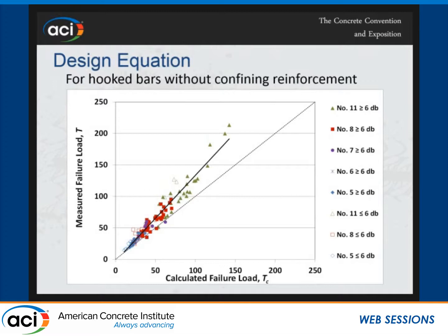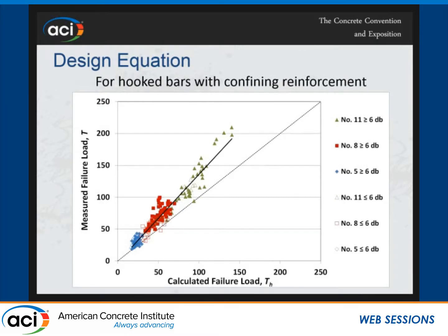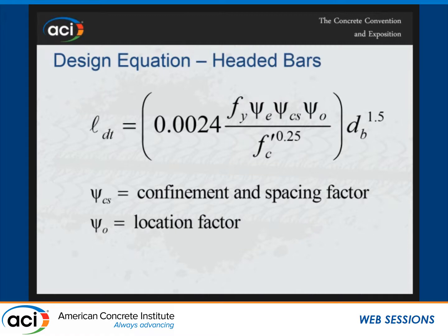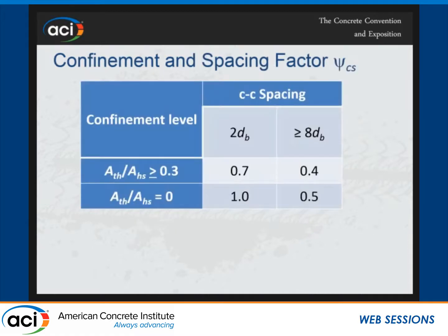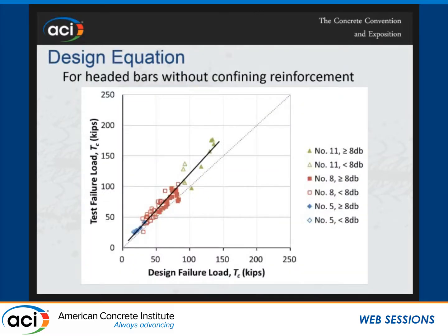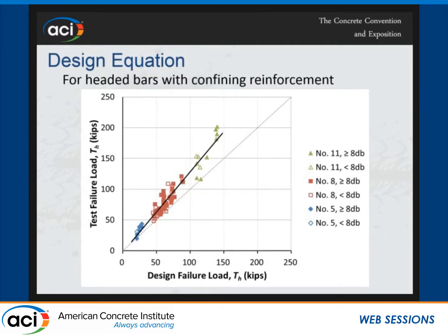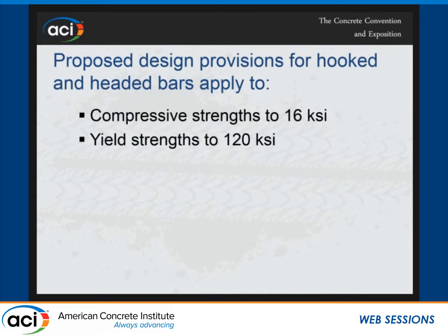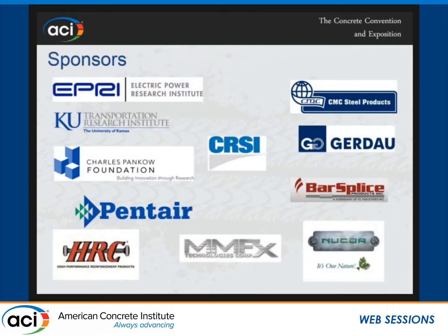So how do we do? This is measured force versus calculated load for hook bars without confining reinforcement — they did quite well, averaging about 1.25 above 1.0. Here are hook bars with confining reinforcement. This is our expression for headed bars — 0.24 power, otherwise similar terms. We have a similar confinement spacing factor, except here we let the spacing get out as far as eight bar diameters center to center, and we can drop it down to 0.4 instead of 0.5, and to 0.5 instead of 0.6 for wide spacing. This is the value representing equality and this is the best fit line — shown without confining reinforcement and with confining reinforcement. The proposed design provisions cover compressive strengths up to 16 KSI and yield strengths to 120. I want to thank our sponsors.